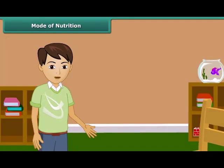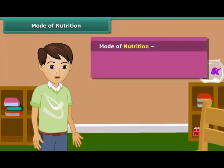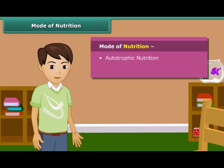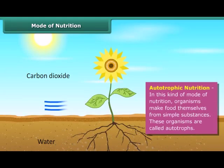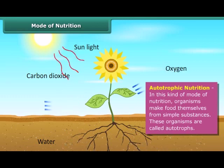Now let's know about the mode of nutrition. There are two types of nutrition modes: autotrophic nutrition and heterotrophic nutrition. The mode of nutrition in which organisms make food themselves from simple substances is called autotrophic nutrition, and these organisms are called autotrophs.